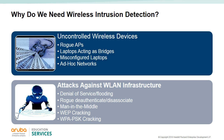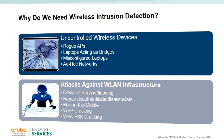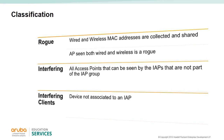IDS classifies APs into three types. A rogue AP is considered rogue if it is both unauthorized and plugged into the wired side of the network. An interfering AP is one seen in the RF environment but not connected to the wired network. While an interfering AP can potentially cause RF interference, it is not considered a direct security threat; however, an interfering AP may be reclassified as a rogue AP.